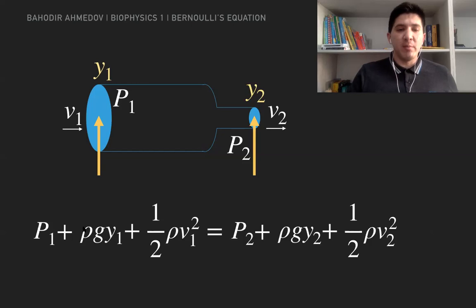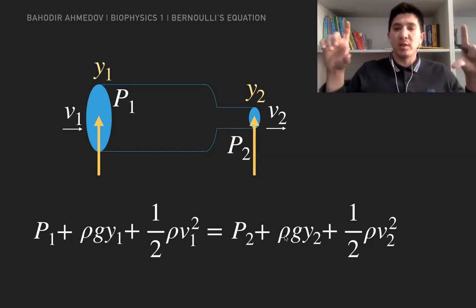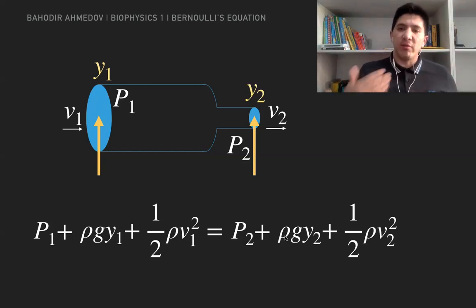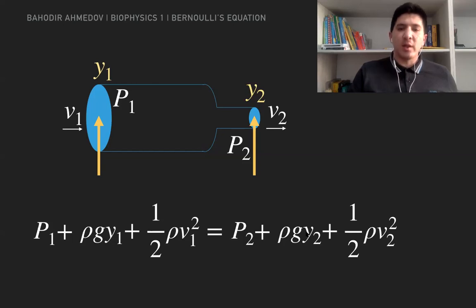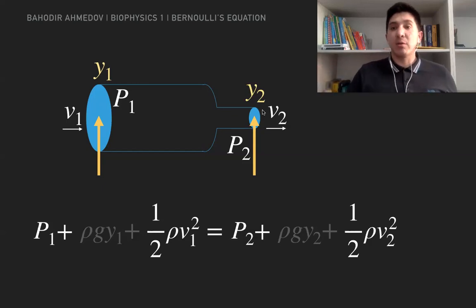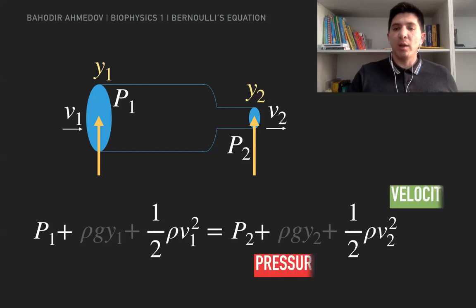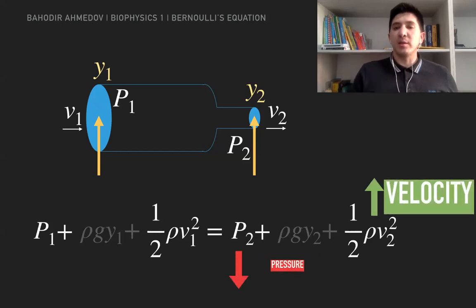Here, the term rho·g·y1 is going to be the same as rho·g·y2 since the heights are the same, so we can simply cancel them. The density rho for water is equal to 1000 kilograms per cubic meter. If you look at this tube, the cross-sectional area is becoming smaller at the end, which means the velocity of the fluid is increasing according to the continuity equation. So the kinetic energy is increased, and that is why the pressure at the end of the tube is going to decrease so that the total energy remains the same. The Bernoulli equation implies that if I increase the velocity, the pressure is going to decrease.